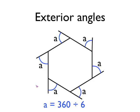If I do 360 divided by the number of exterior angles I've got, in this case six, I get 60 degrees. So in a regular hexagon, all of the exterior angles are 60 degrees.